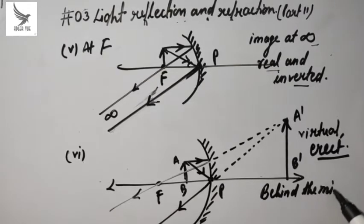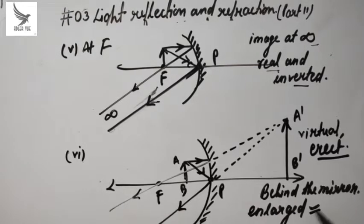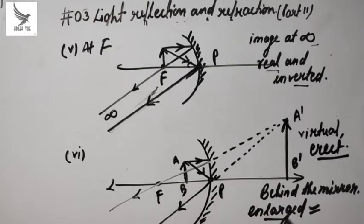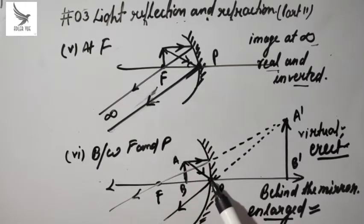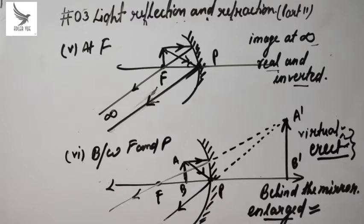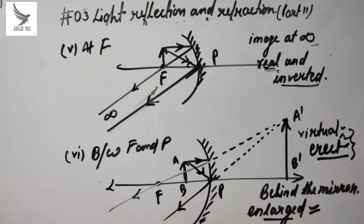The image is formed behind the mirror. Also, the image formed is enlarged — meaning a bigger image is formed. So sometimes this question is asked: where should we place the object in front of a mirror to get an enlarged image that is virtual and erect? The answer is: between the focus and the pole of the mirror. When the object is placed between focus and pole, the image is virtual and erect. If you place the object anywhere else, the image will be real and inverted.